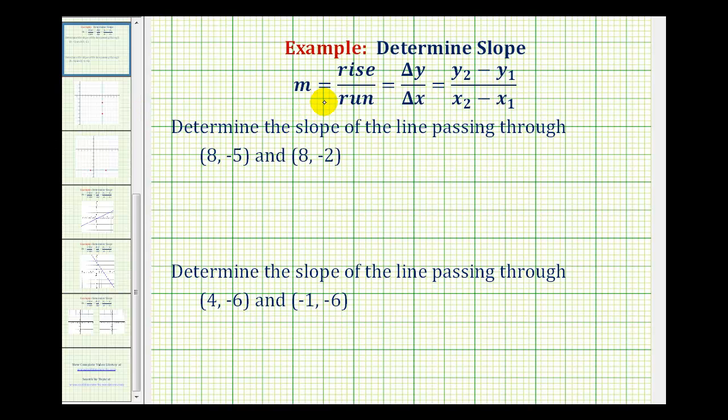The slope of a line is the ratio of the vertical change with respect to the horizontal change, often written as the rise over the run or the change in y with respect to the change in x. If we're given two points on a line, we can determine the slope using this formula where we compare the change in the y-coordinates with respect to the change in the x-coordinates.